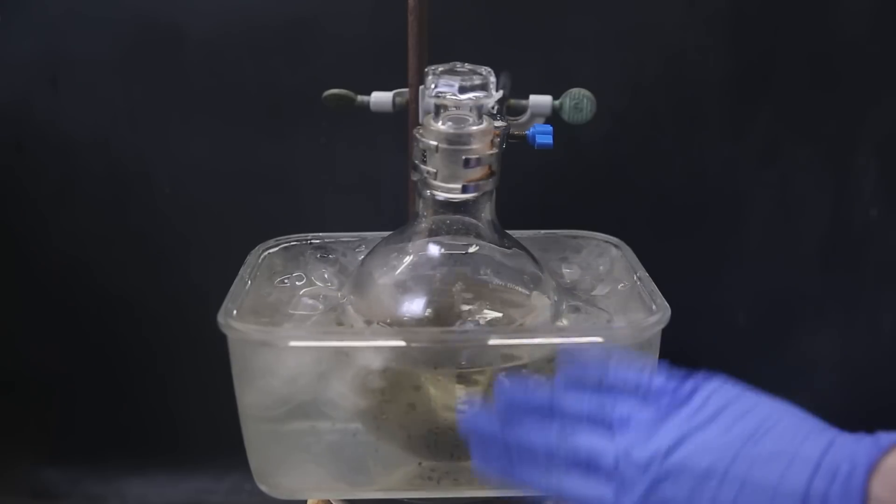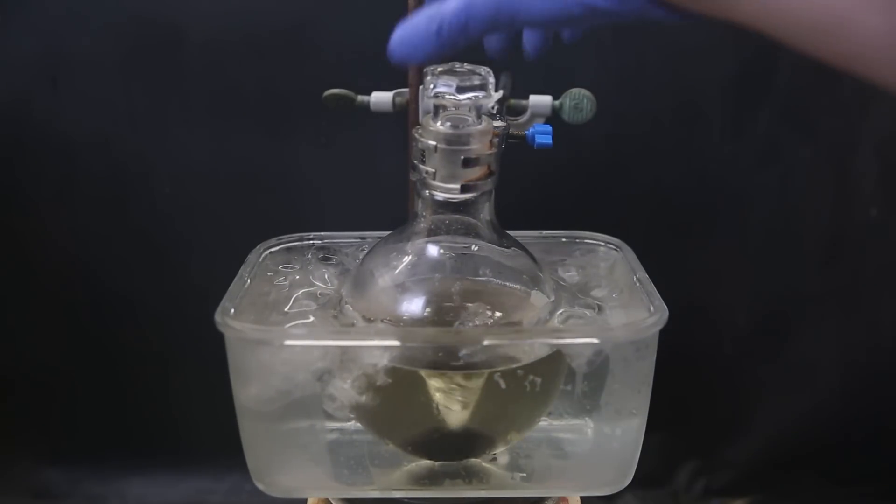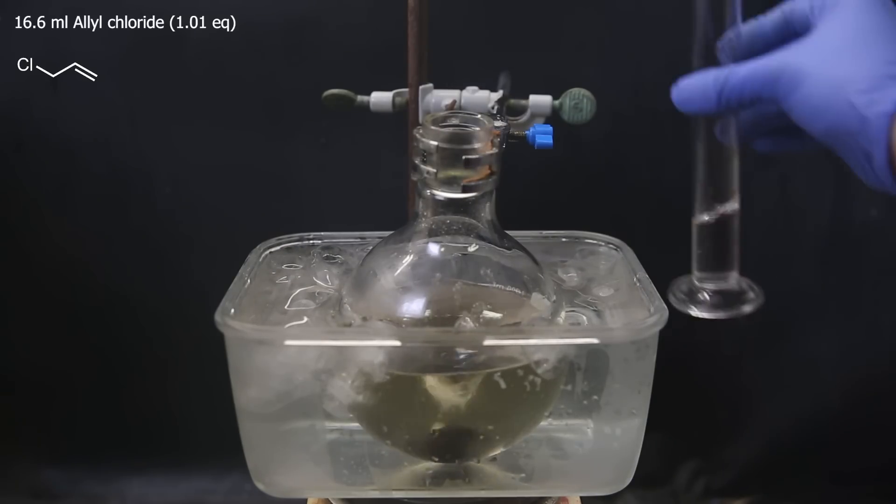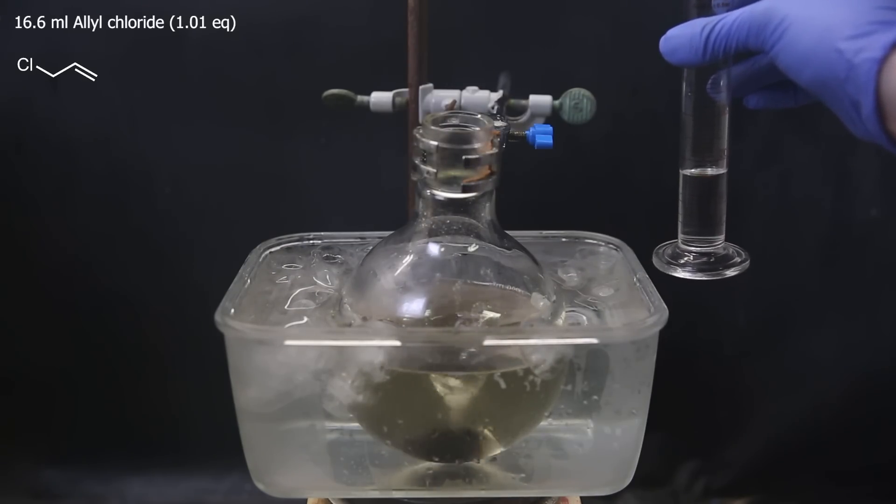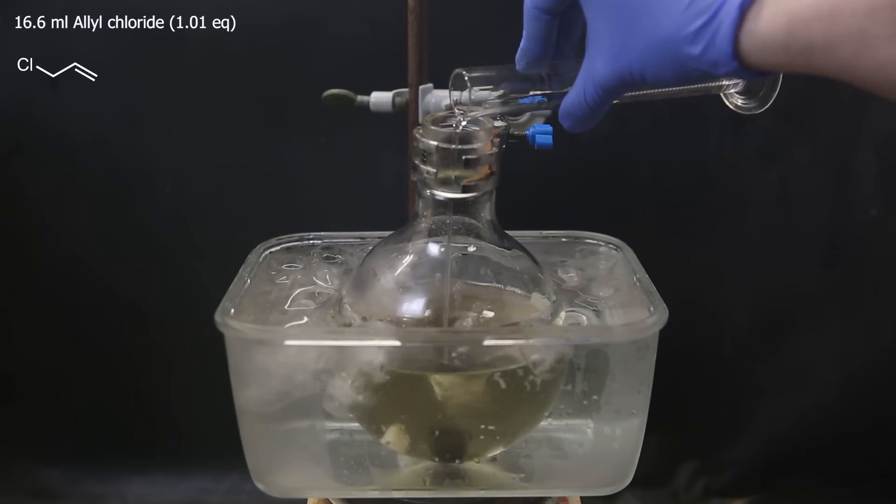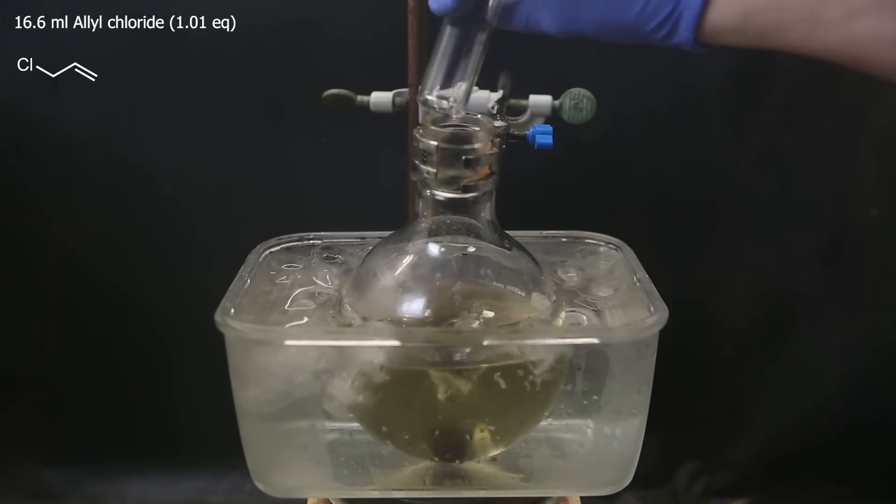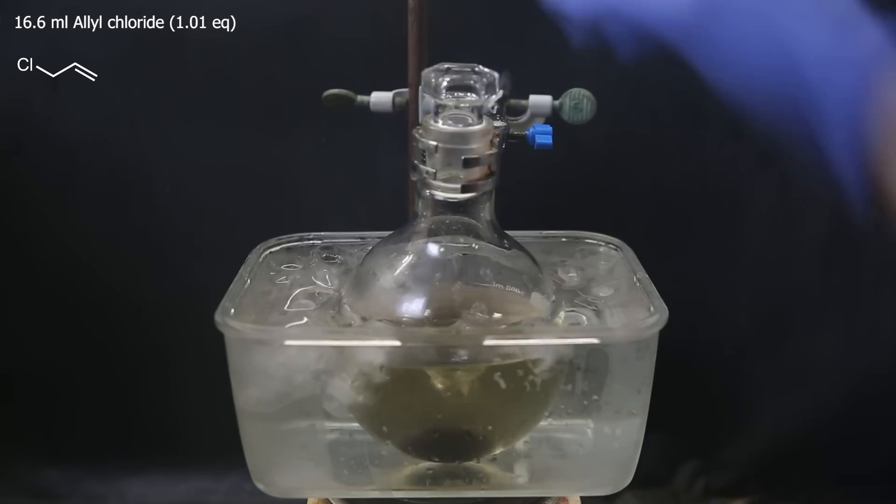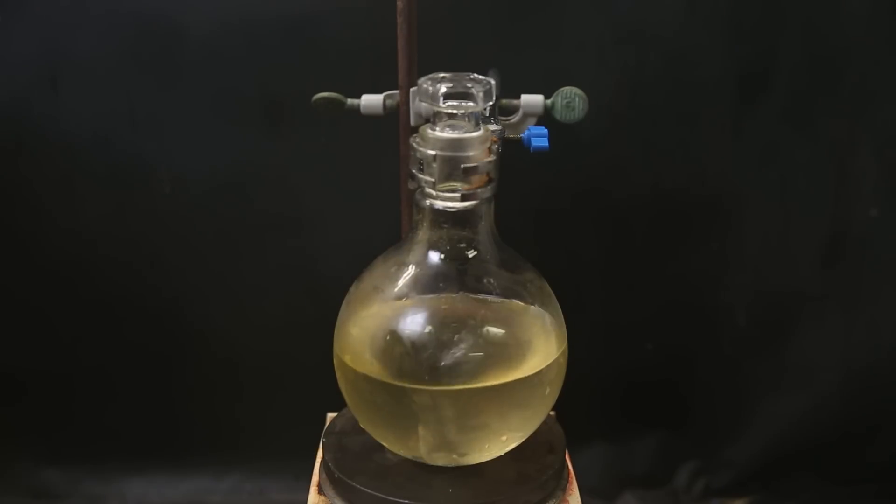When all of it has dissolved, we see it has become slightly yellow, probably from the formed intermediate, and at this point, I can add the next reactant, which is 16.6 ml of allyl chloride, and that can all be added at once, since the reaction isn't that fast. I then take it out of the ice bath and let it stir at room temperature overnight.